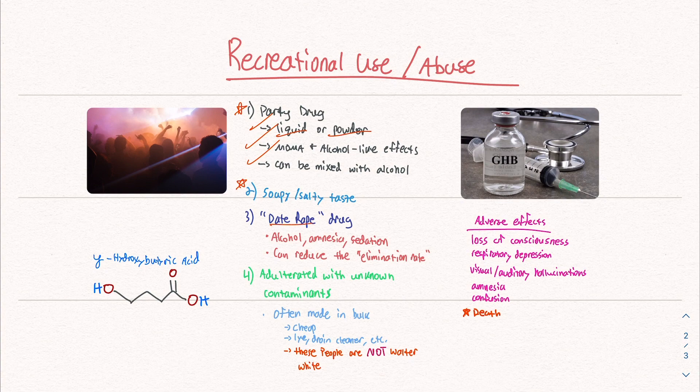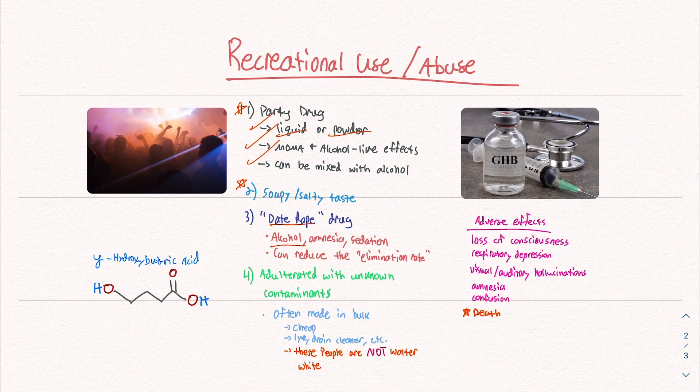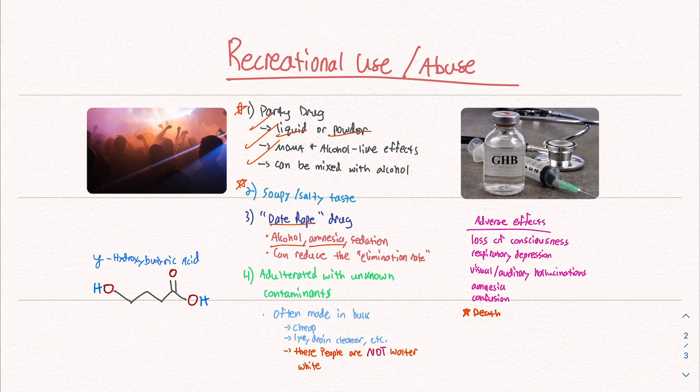Because of its properties and its ability to be mixed with alcohol, GHB is known to produce amnesia. I mentioned before sedation, euphoria, all sorts of different things. But this amnesia portion is where the abuse comes in.